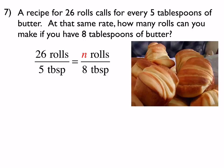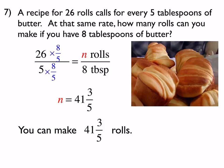The multiplier is 8 fifths, because 5 times 8 fifths is 8. So 26 times 8 fifths tells us how many rolls we can make, and that would be 41 and 3 fifths rolls. It is a word problem, so we need to make sure we answer it as a sentence — that part has not changed all year long.